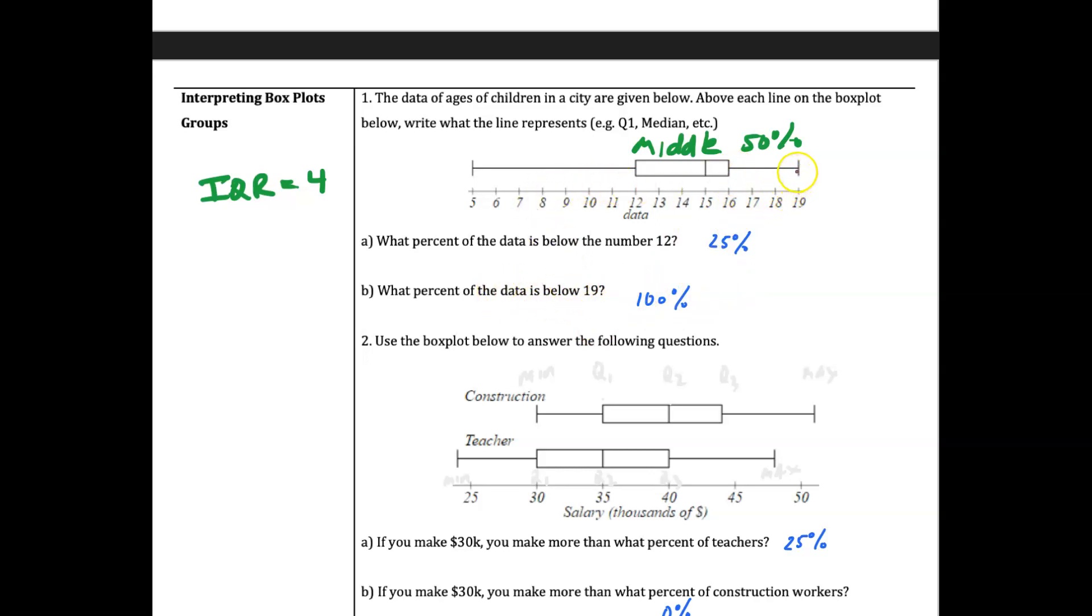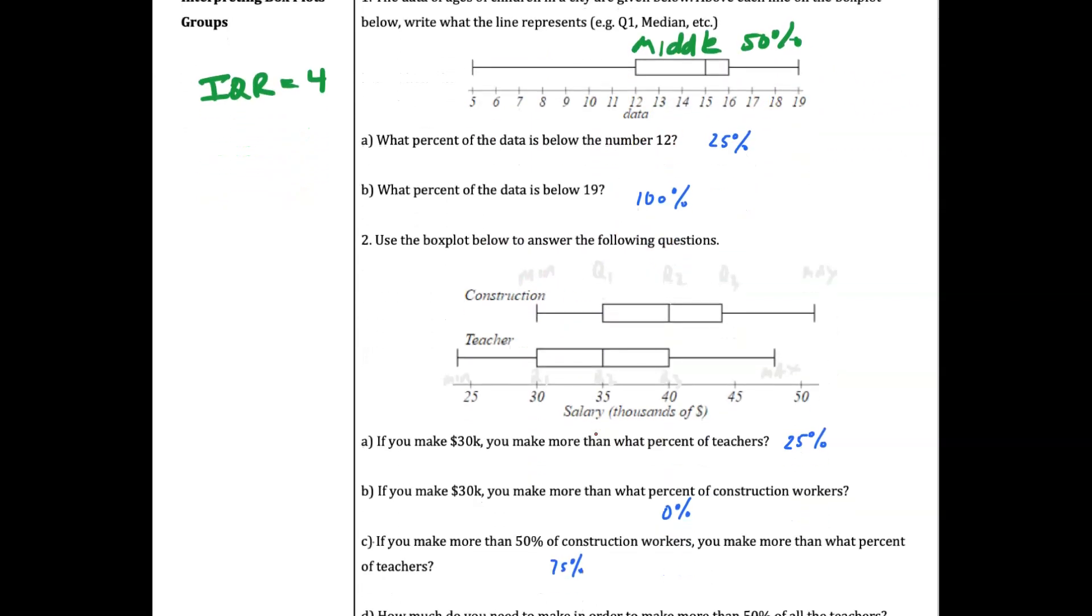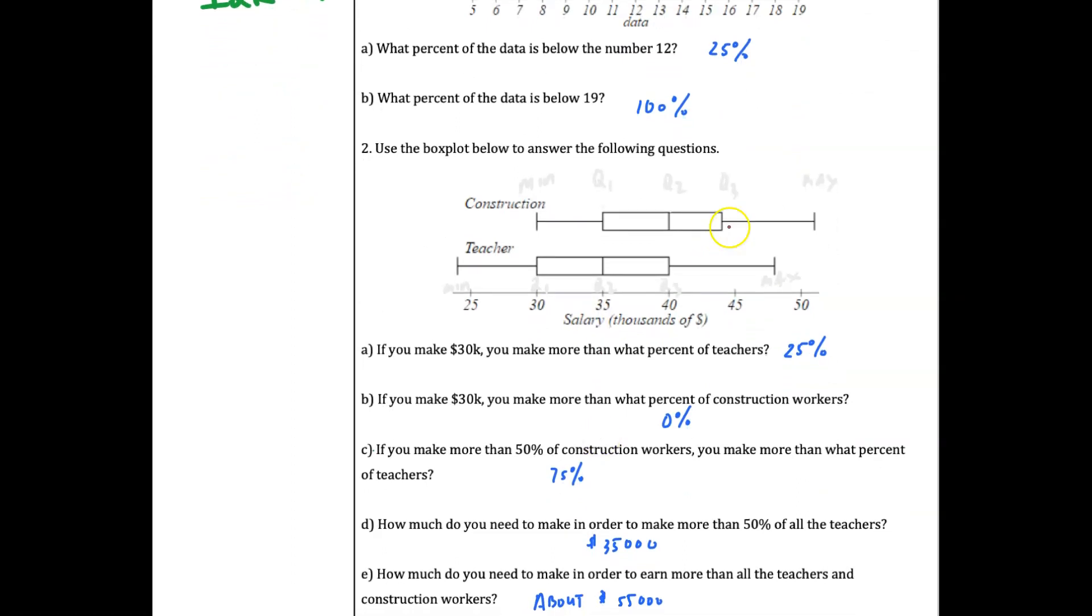Looking at some more data here - this is fictitious data for construction workers and teachers - you can look and then easily compare the distributions. Q1, Q2 is in the middle, and the same thing for the teacher. There's your Q3 and here's your max. For this one, here's your min, quartile one.